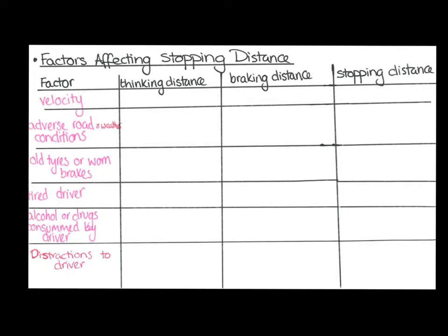Now we can look at a variety of factors that affect the stopping distance of a vehicle: the velocity, adverse road and weather conditions, old tyres or worn brakes, having a tired driver, if the driver has consumed alcohol or drugs, or if the driver is being distracted. What would be great is if you drew out this table and tried to fill it in without the video, then compared your answers.